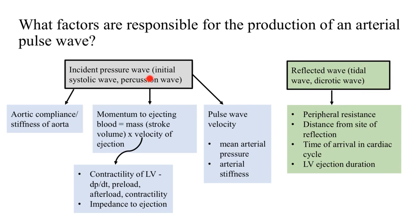What factors affect the incident pressure wave? Number one is aortic compliance or stiffness of the aorta. Second is the momentum of the ejecting blood, which is equal to mass times velocity of ejection — the mass of the blood being the stroke volume. The velocity of ejection is in turn dependent on contractility of the left ventricle, which is dependent on dP/dt (change of pressure per change of time), as well as preload, afterload, and intrinsic contractility of the left ventricle. Impedance to ejection, or afterload overall, also has a role in determining the velocity of ejection. Additionally, the pulse wave velocity is determined by the mean arterial pressure as well as the overall arterial stiffness of the entire arterial tree.